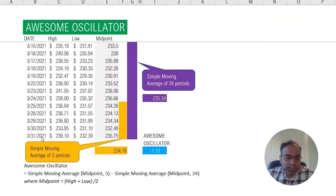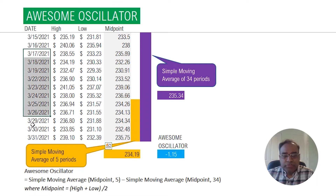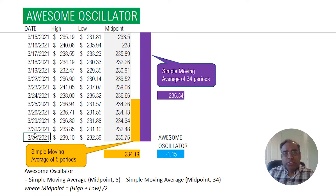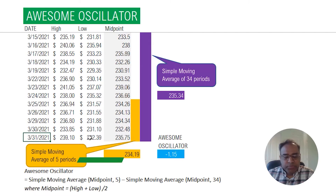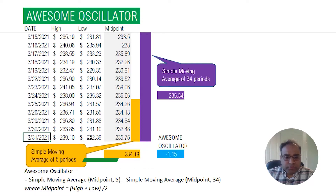For example, we have the high and low prices for a certain stock for every day. What we're trying to do is calculate what was the oscillator value for March 31st. In order to do so, we need to calculate two simple moving averages. If you are interested in knowing more about the simple moving average, please check out our other video which we did a few days ago.